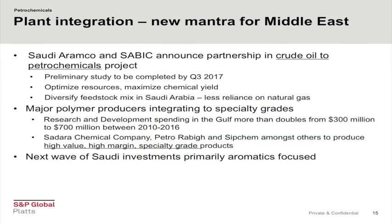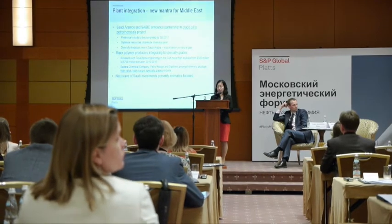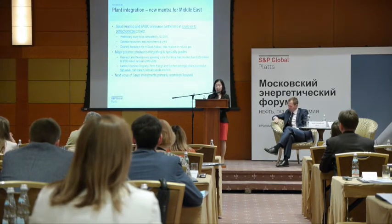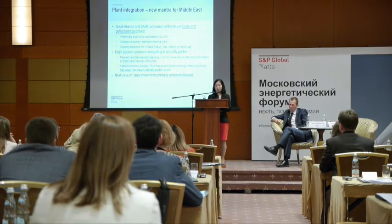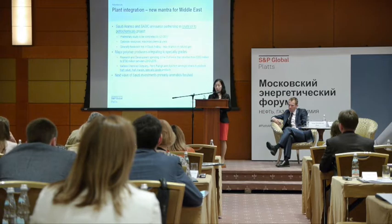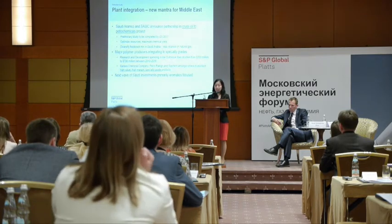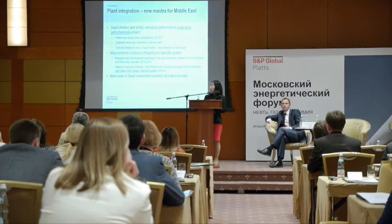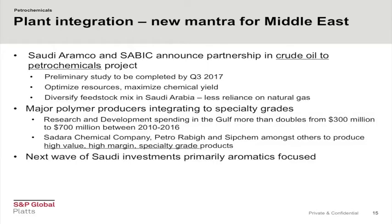The aim is to relieve gas supply constraints the country has suffered in recent years and to reduce dependence on crude oil export revenues. The preliminary study is expected to be completed by the third quarter of the year, with plans to build a fully integrated petrochemicals complex that maximizes chemical yield, optimizes resources, and diversifies the petrochemical feedstock mix. The aim is also to create jobs and develop technology, especially in downstream conversion of high-value speciality chemicals. This is an ongoing trend in the Middle East: after focusing many years on commodity petrochemical products, major producers are looking to expand capacity in high-value, high-margin speciality grade polymers.